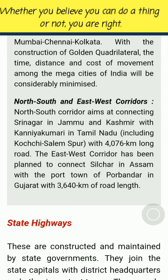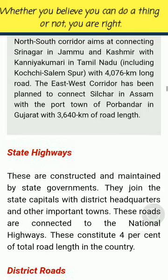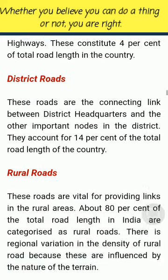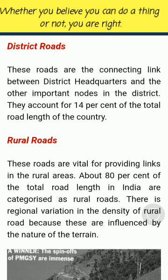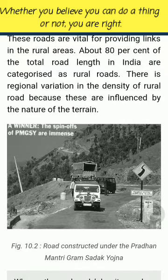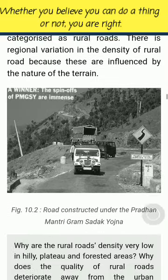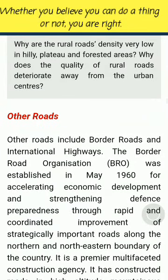State Highways are constructed and maintained by state governments. They join the state capitals with district headquarters and other important towns, and are connected to the national highways. These constitute 4% of total road length. District Roads are the connecting link between district headquarters and other important nodes in the district, accounting for 14% of total road length. Rural Roads are vital for providing links in rural areas; about 80% of the total road length in India is categorized as rural roads. There is regional variation in rural road density because these are influenced by the nature of the terrain.